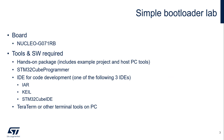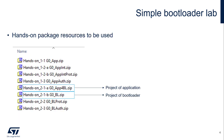Similar to the former protection hands-on, we will still be using the Nucleo G071RB board and the same set of tools and software. Make sure you download the hands-on package and have the Cube Programmer — any one of the three IDEs listed — and also a terminal tool on the PC to get print messages from the board. We're going to use two projects from the hands-on package: one for the application and the other one for the bootloader.